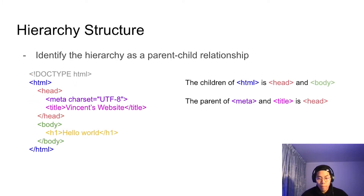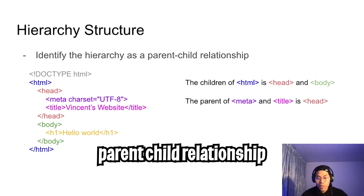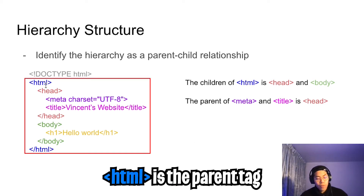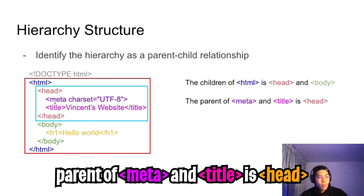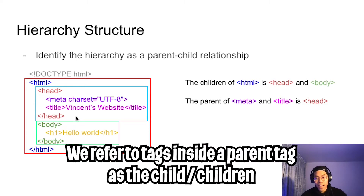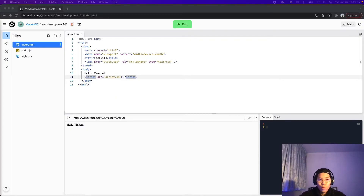One thing to quickly mention is that in programming, we like to use the concept of parent-child relationships. In this case, the HTML tag is the parent tag for the head and the body tags. And the parent of the meta and the title tags is the head tag. So the head and the body are the children of HTML — basically, if a tag belongs inside another tag, it's the child of that tag.